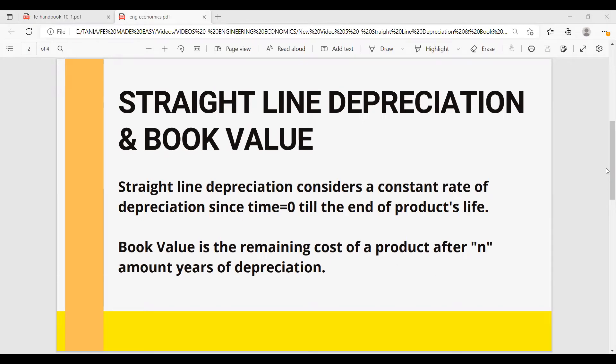Today we're going to talk about straight line depreciation and book value. The straight line depreciation considers a constant rate of depreciation for that product from time equals zero till the end of product's life. Book value is the remaining cost of a product after a number of years of depreciation. Let's have an example of this.